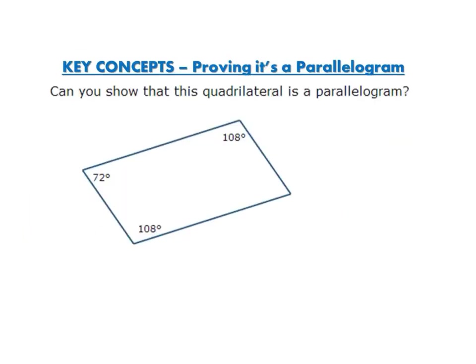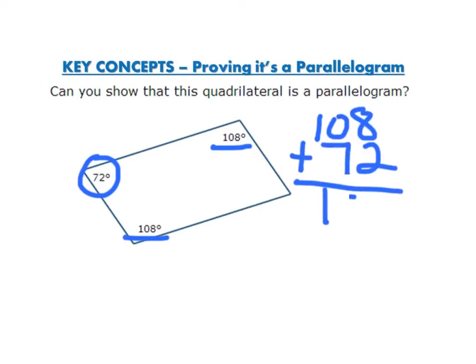Can you show that this quadrilateral is a parallelogram? I have this angle and its two consecutive angles: 108 plus 72 equals 180, and again 72 plus 108 also equals 180. So these angles are supplementary, which means this is a parallelogram.